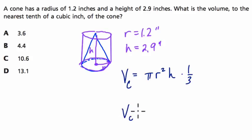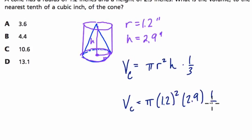So for the volume of the cone, we have pi times radius squared, so 1.2 squared, times 2.9, times one-third. So the volume of the cone equals this.